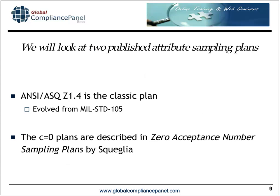We're going to look at two published attribute sampling plans. ANSI ASQ Z1.4 is the classic plan — it evolved from MIL Standard 105. The other plan is the C equals zero plans; the one I'll discuss is called Zero Acceptance Number Sampling Plans by Squeglia, published by the American Society for Quality. We'll discuss exactly how these two plans work and what's the same and different between them.